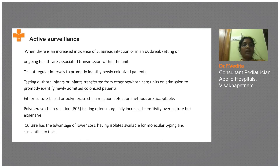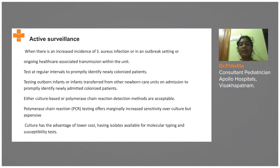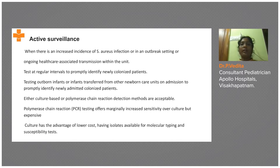Now coming to active surveillance specific to Staphylococcus aureus, according to the latest CDC 2021 guidelines: if there is an increased incidence of Staphylococcus infection in your unit — either endemic or an outbreak — or healthcare-associated transmission, you have to identify newly colonized patients at regular intervals. The frequency depends on your unit policy — it can be weekly or twice a week.